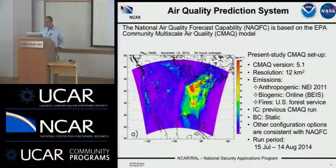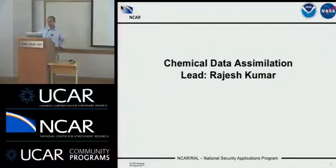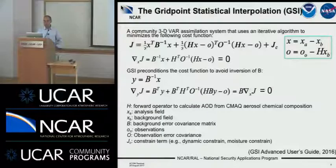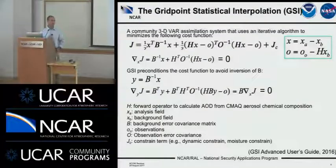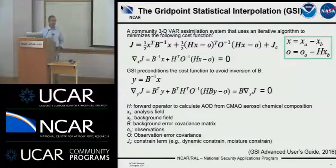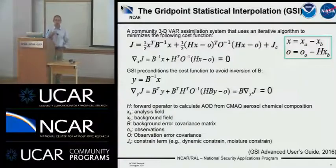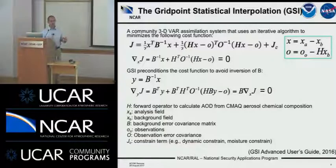The chemical data assimilation task has been led by Rajesh, and for this task we are using the GSI system. Here you see the standard formulation of a variational algorithm — the goal is to minimize this cost function. I want you to focus on two important parameters: the H forward operator, which is needed to calculate AOD from CMAQ chemical composition, and the B matrix — the background error covariance matrix — which tells the algorithm how to spread the correction in space and across different variables once an observation is available.